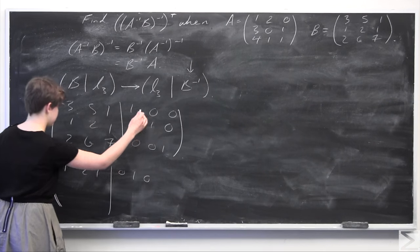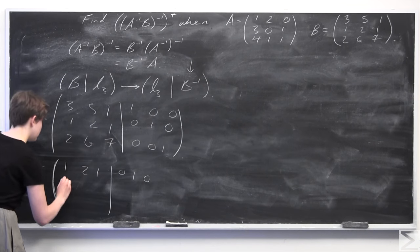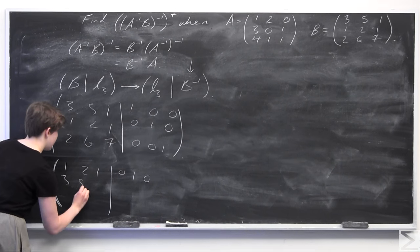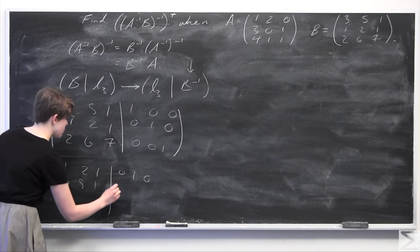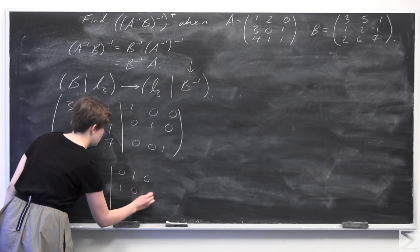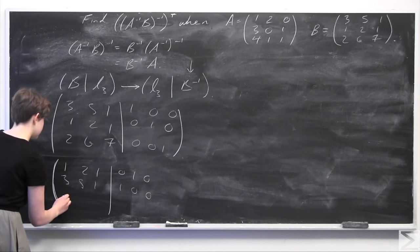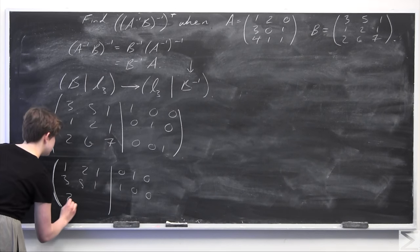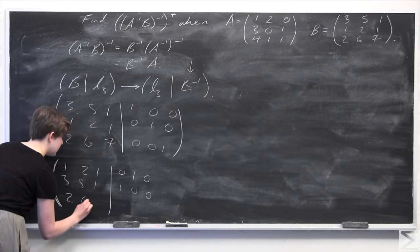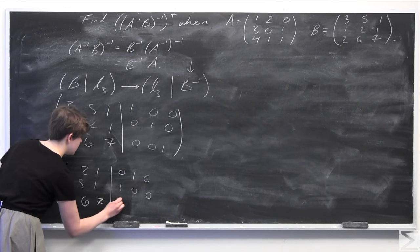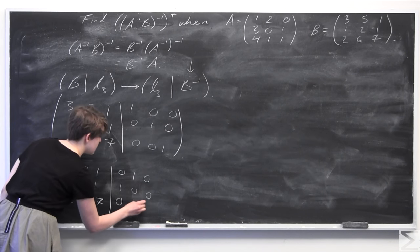Make sure to also switch the corresponding rows on the right-hand side. After the row swap we get: row 1 becomes 1, 2, 1 | 0, 1, 0; row 2 becomes 3, 5, 1 | 1, 0, 0; and the last row stays the same.